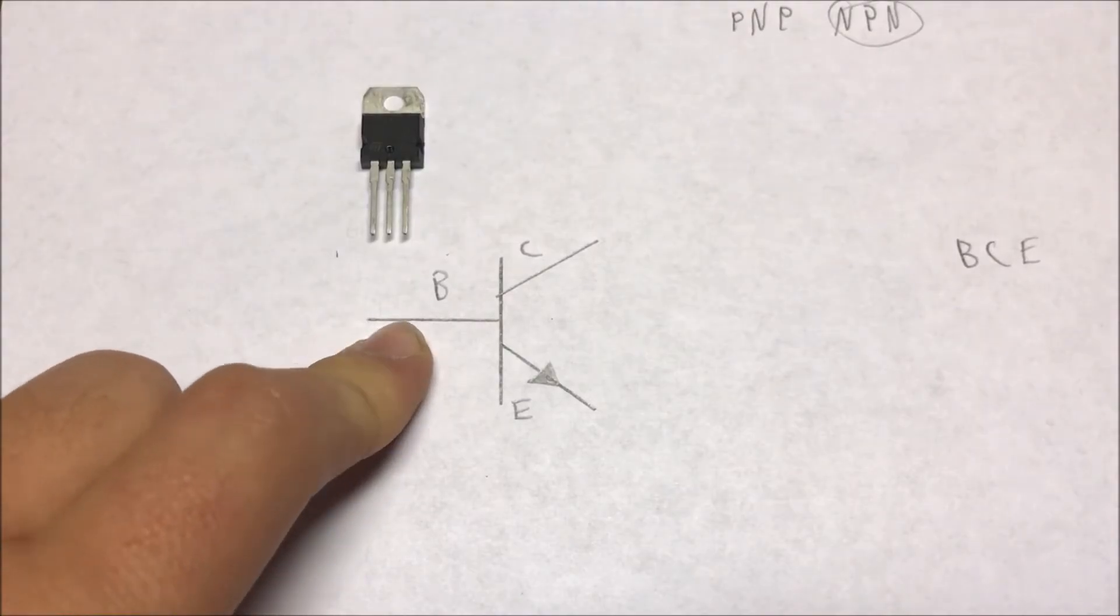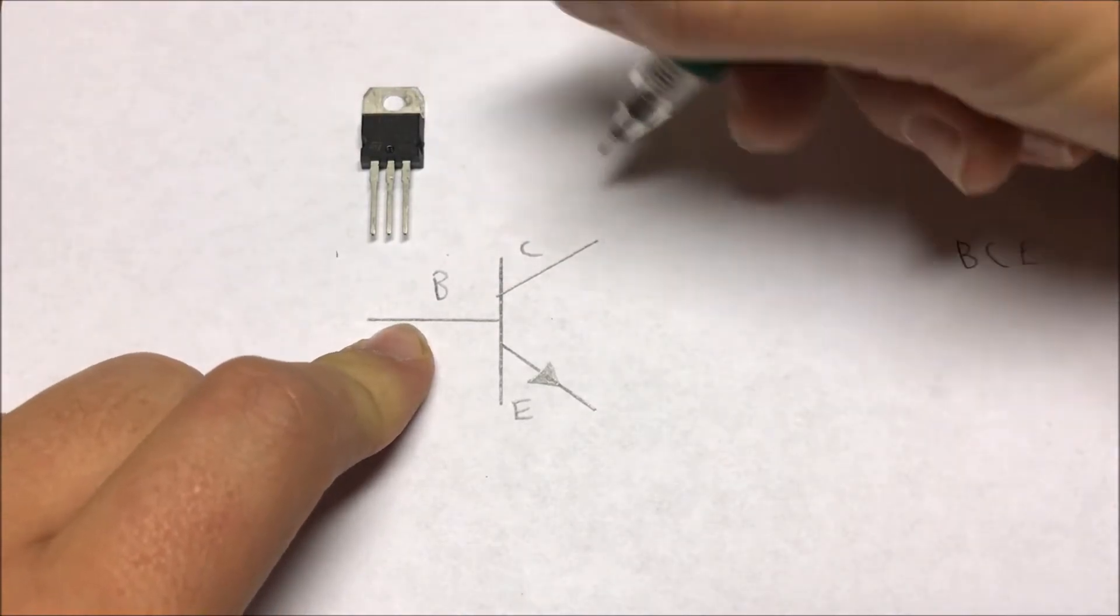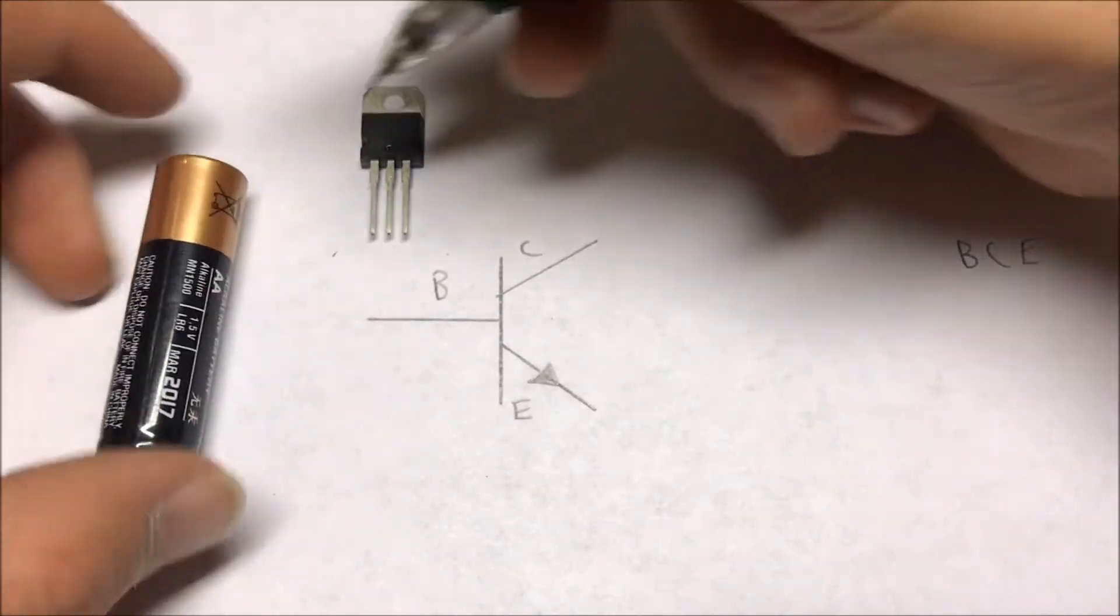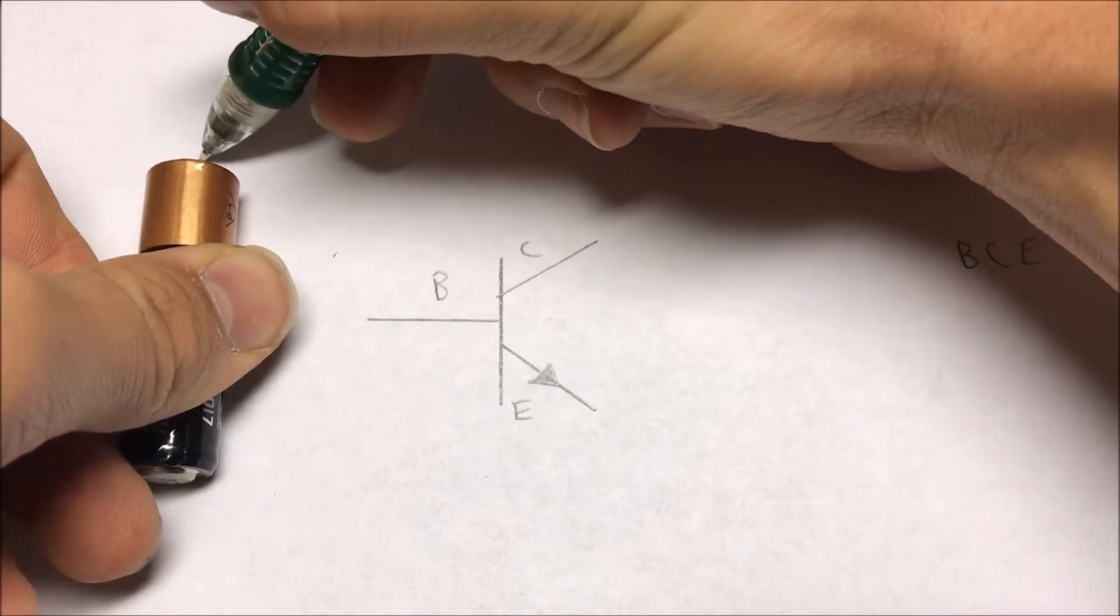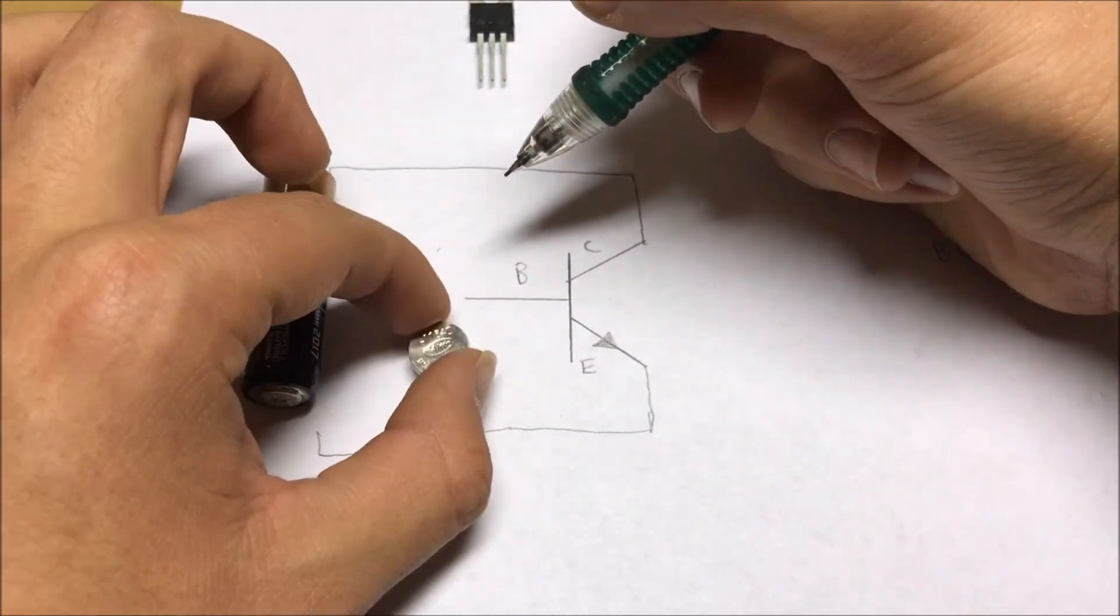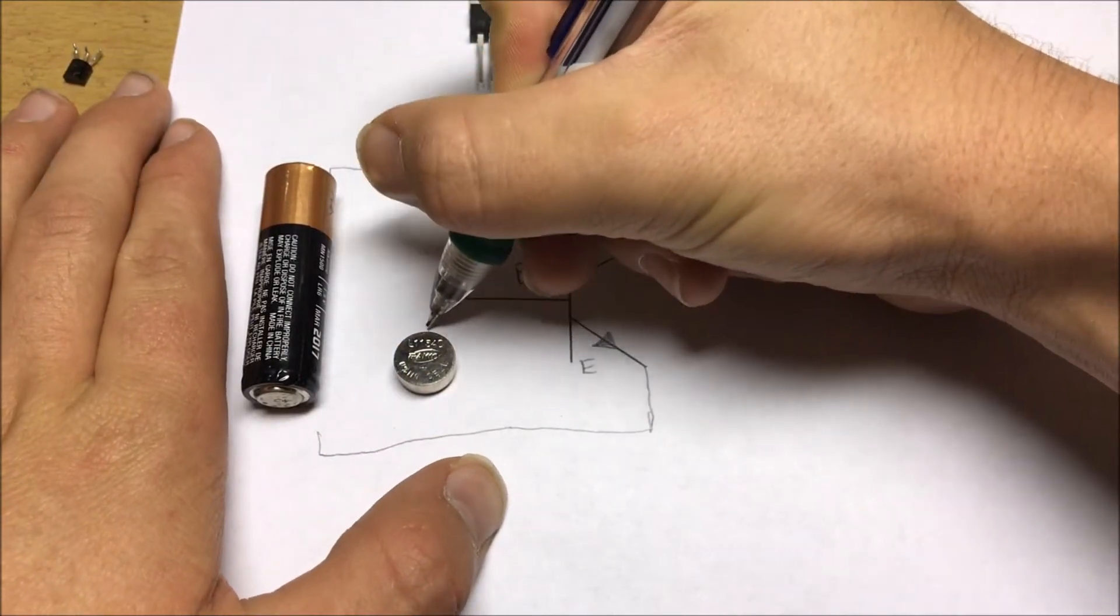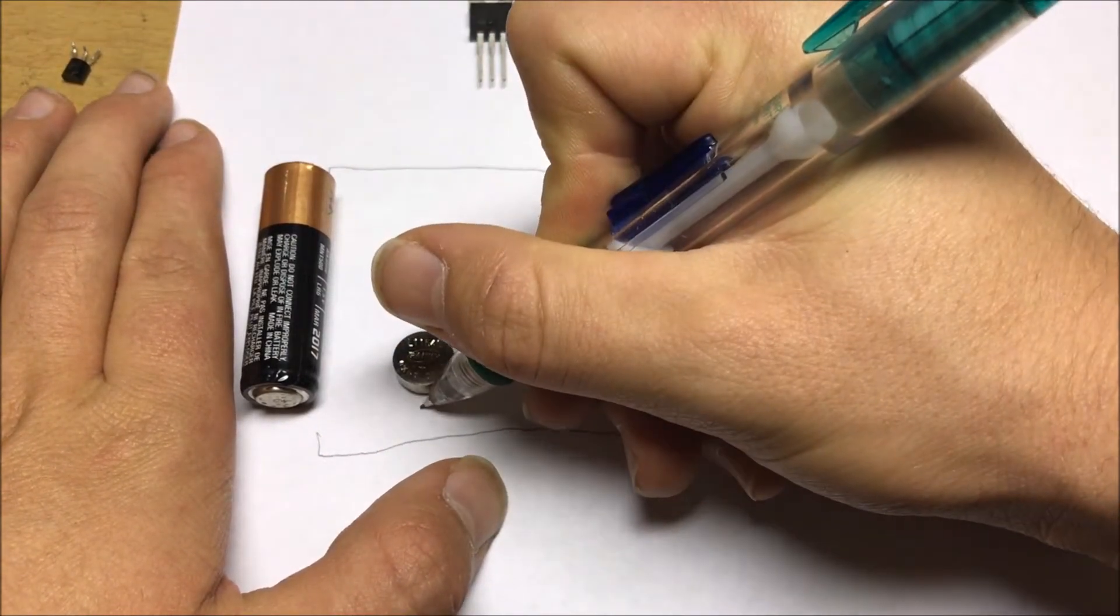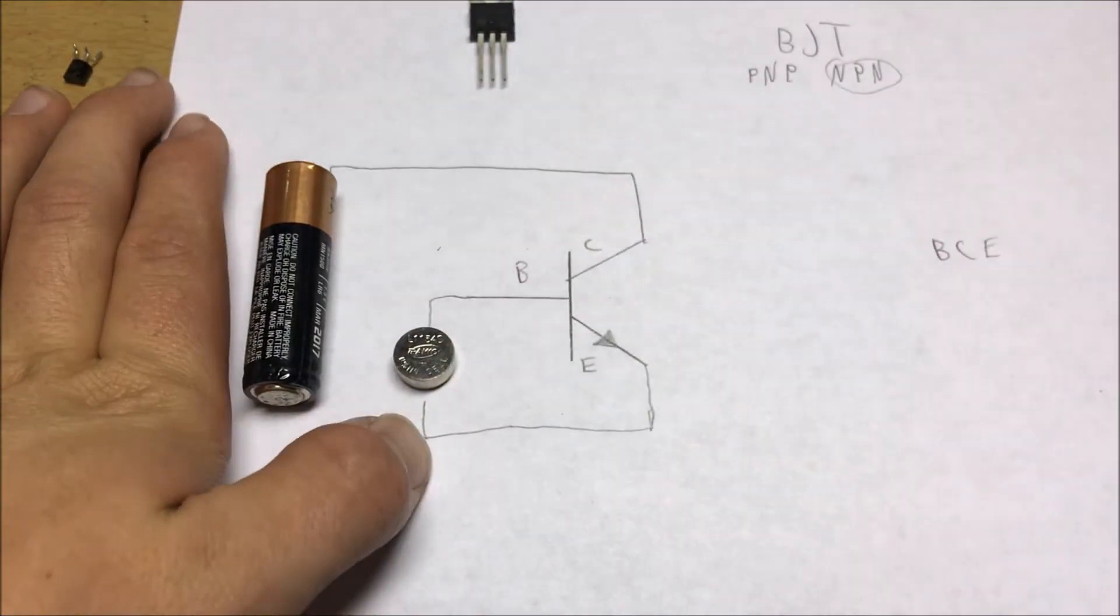So in this transistor circuit diagram, if we have let's say a battery right here, and we draw some wires from the battery, no current is going to flow through this system. If I take a tiny battery, and I draw from positive to base, and connect the ground to emitter,